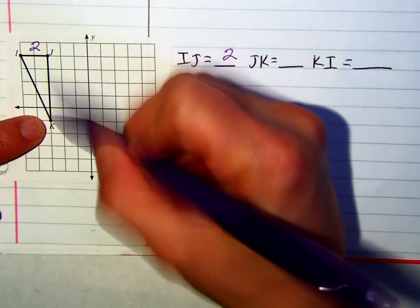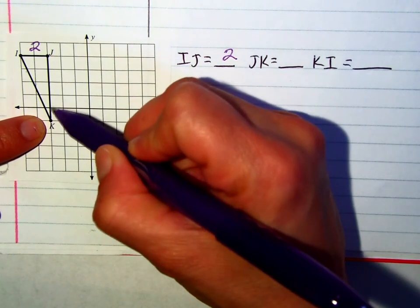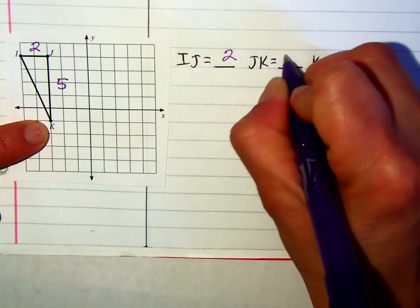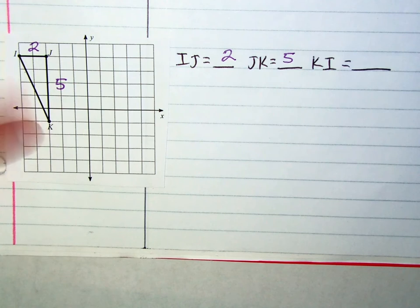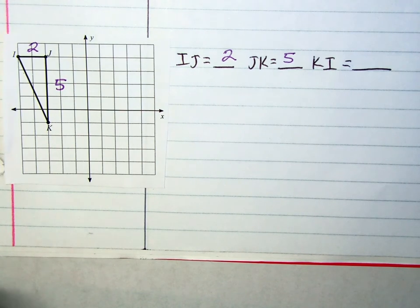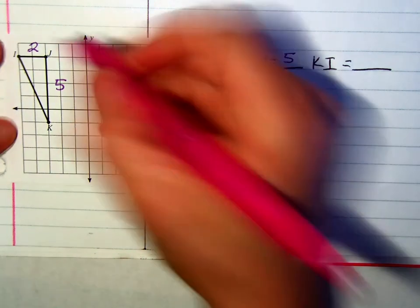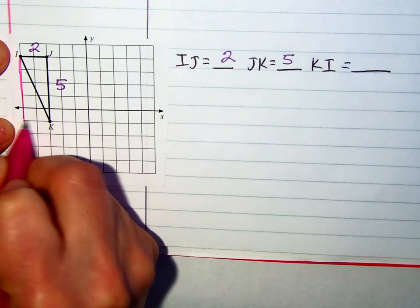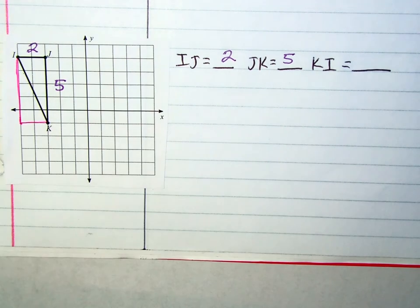I count from J to K: one, two, three, four, five units. And now KI, I really can't count how many boxes, how many units. So these are the types of segments or sides where you should build the right triangle, or if you want to use the distance formula, you may. I feel that creating that right triangle helps us find that base and that height quite easily, and then we can use that modified version of the Pythagorean theorem.